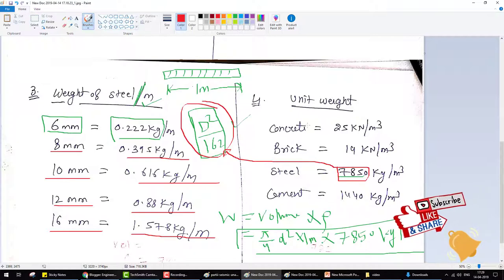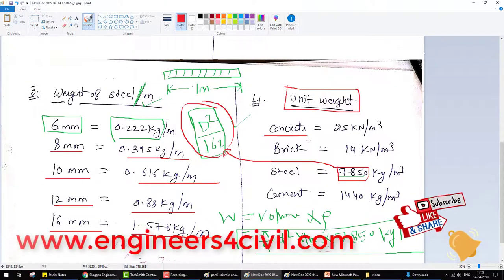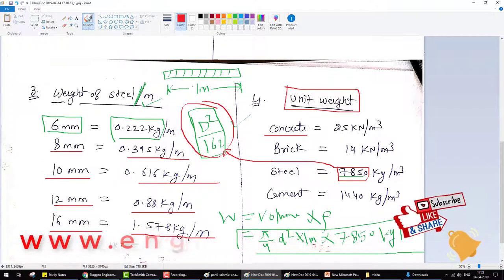Next is unit weights. In construction, we use different types of materials. First, concrete has density 25 kilo newton per meter cube - this is concrete with RCC. If you're talking about plain concrete, the plain concrete density is 24 kilo newton per meter cube. Brick is 19 kilo newton per meter cube.